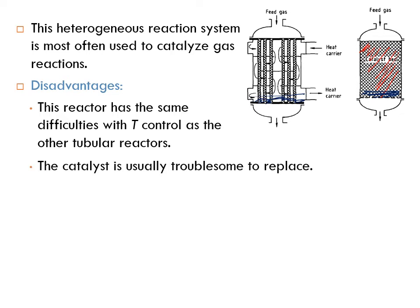The catalyst is usually troublesome to replace. Imagine a reactor operated for three years with hydrocarbon feedstock — inevitably some is converted to coke, which deposits on the catalyst particles. All the solids become jammed inside the tube, and replacing the catalyst takes a huge amount of time and effort.